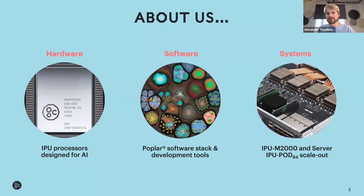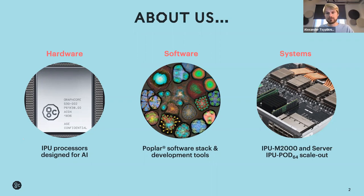As a quick introduction, Graphcore develops processors and compute systems specifically designed for AI and machine learning workloads. We provide hardware technology such as the IPU processor and software development tools as part of a complete solution to enable innovators to solve current and future ML problems. We announced our Mark II second generation processor delivered in the IPU M2000 product and IPU Pod rack-scale products.